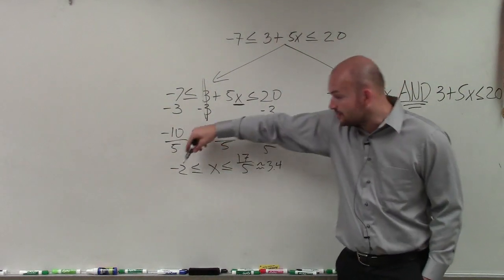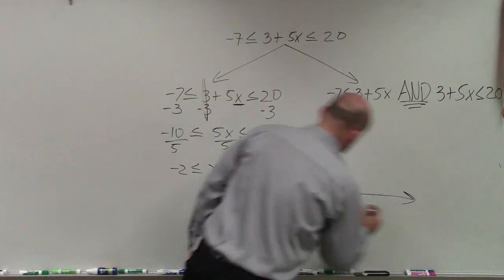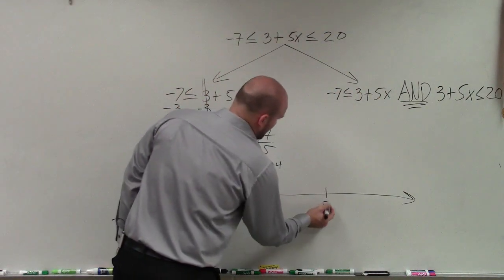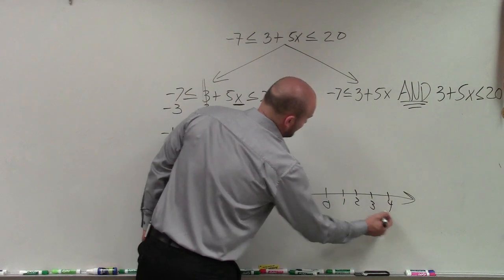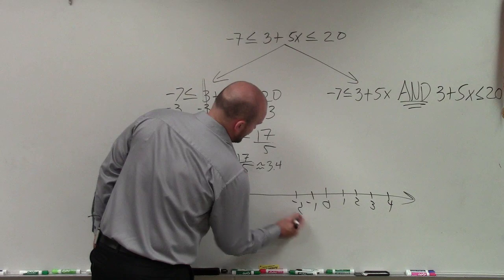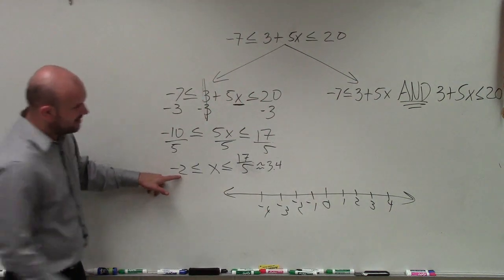The values of x are between -2 and 3.4. So when I go ahead and graph it, I'm going to say I'll put 0 in the front, and then I'll do 1, 2, 3, 4, -1, -2, -3, -4.